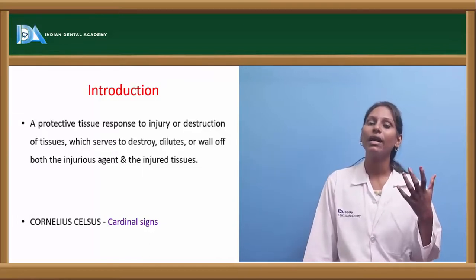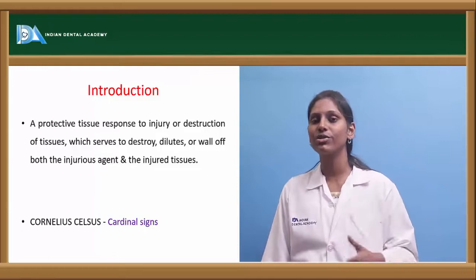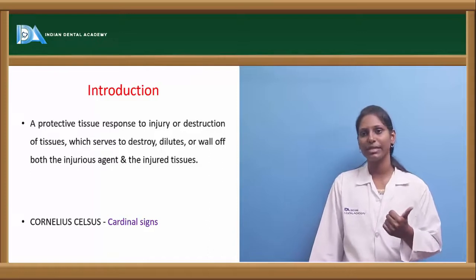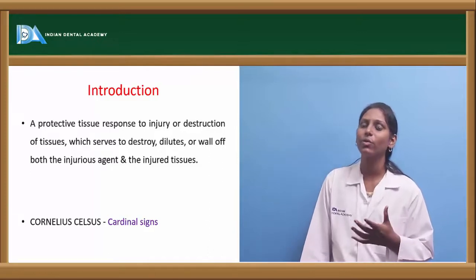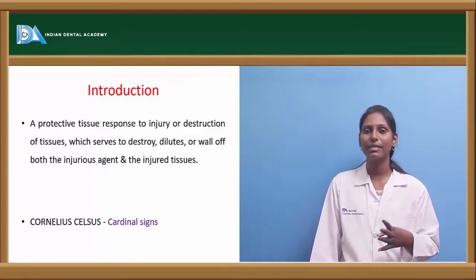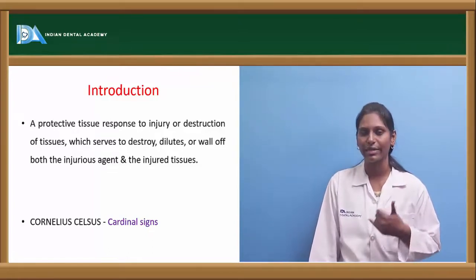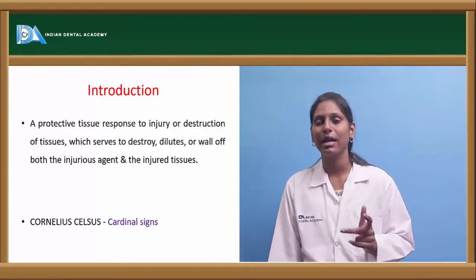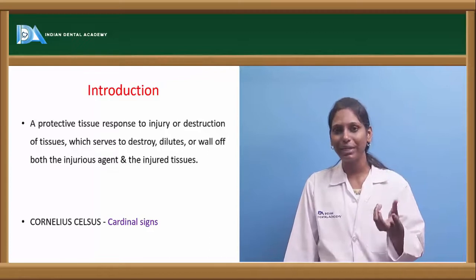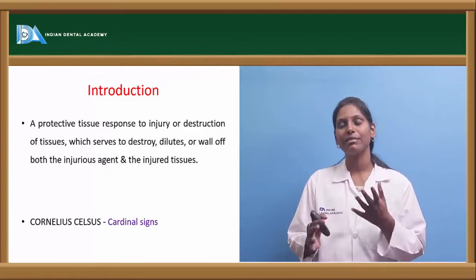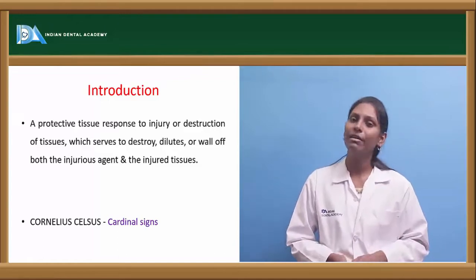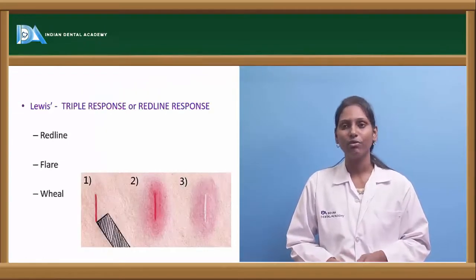There are certain cardinal signs of inflammation which include rubor, calor, dolor, tumor, and functio laesa. Cornelius gave the cardinal signs of inflammation; the fifth sign, functio laesa, was added later. Rubor is redness, tumor is swelling, dolor is pain, calor is increased temperature, and functio laesa is loss of function.